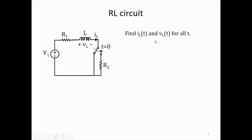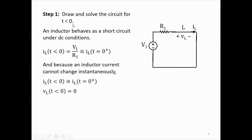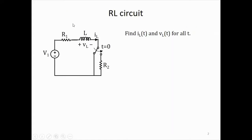We will go through the 3-step process. Step 1: draw and solve the circuit for T less than 0. For T less than 0, the switch is connected here, and we assume the switch was in this position for a long time, so the circuit had achieved DC steady state. In that case, the inductor acts as a short circuit — there will be no voltage across the inductor. The current will be constant; V equals L·dI/dt, I is DC, so V is 0.